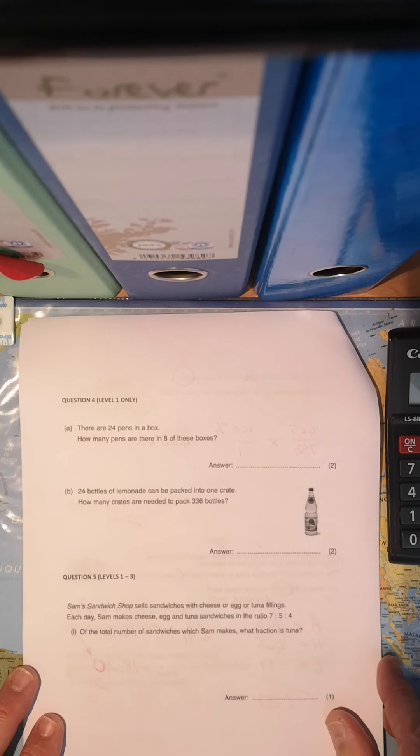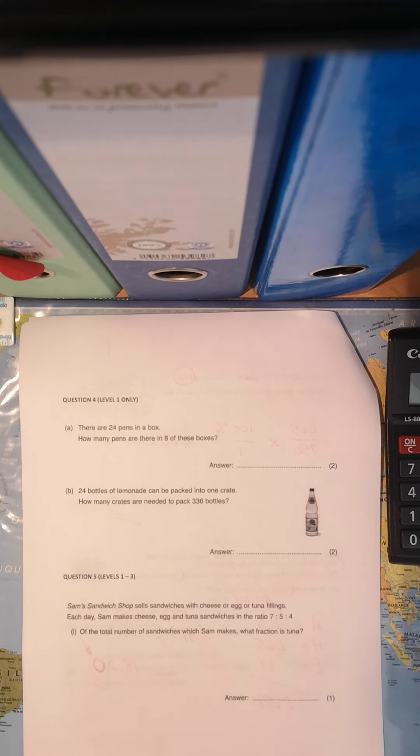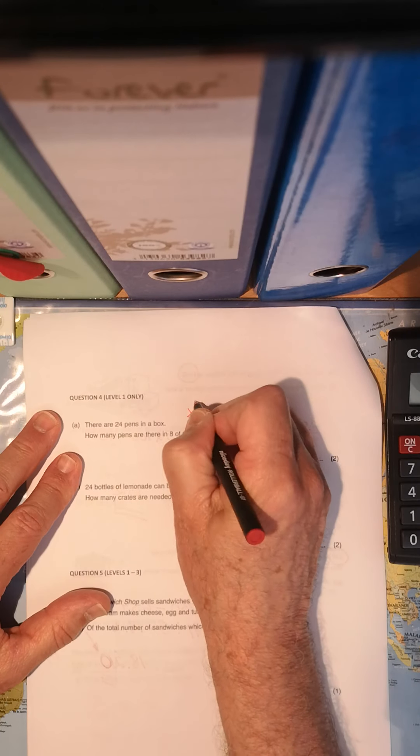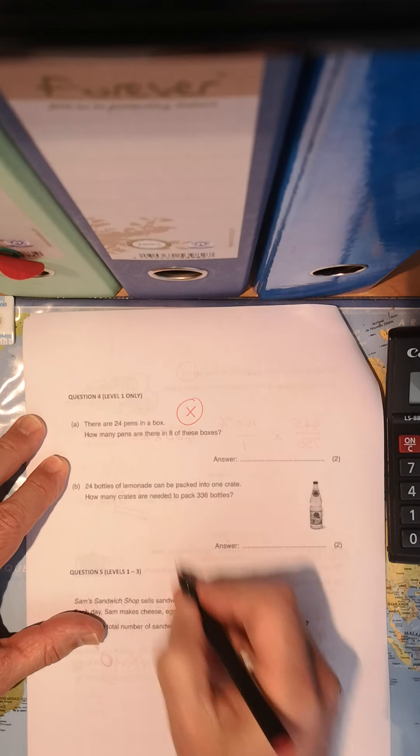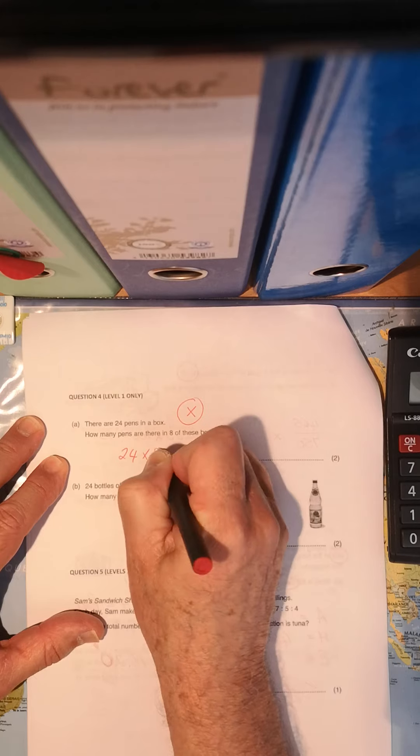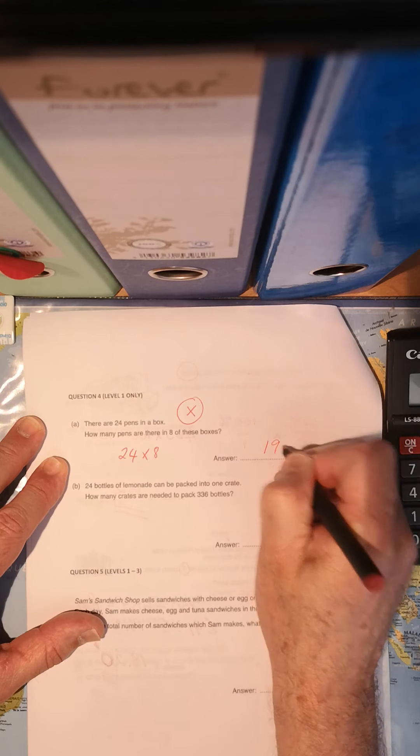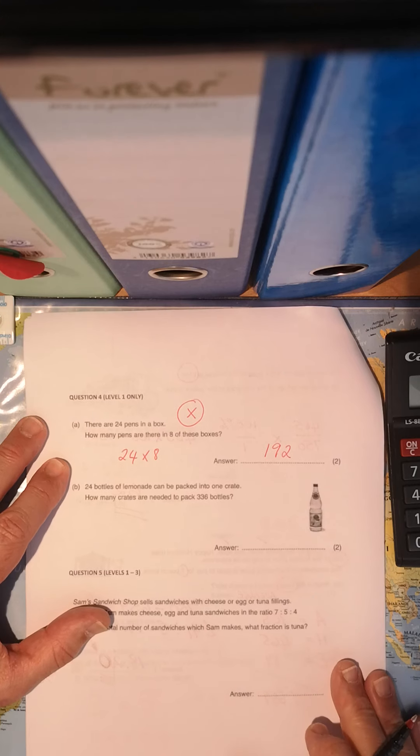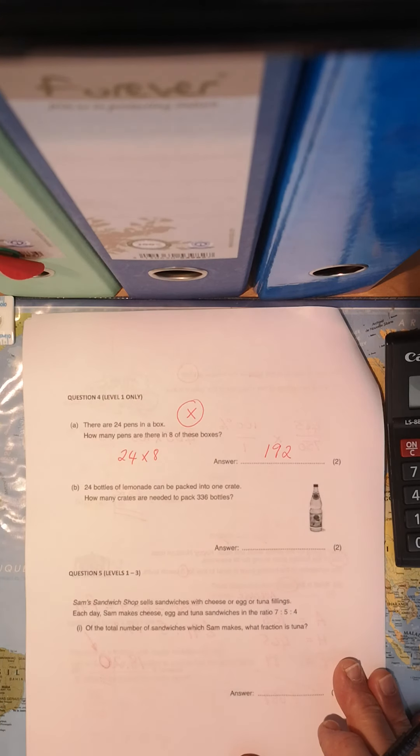Let's move on. Next question. There are 24 pens in a box, 24 pens. So how many pens are there in eight boxes? That looks like a multiplication sum to me. So quite simply, 24 times 8, that gives me 192. So in eight boxes, I would have 192 pens.